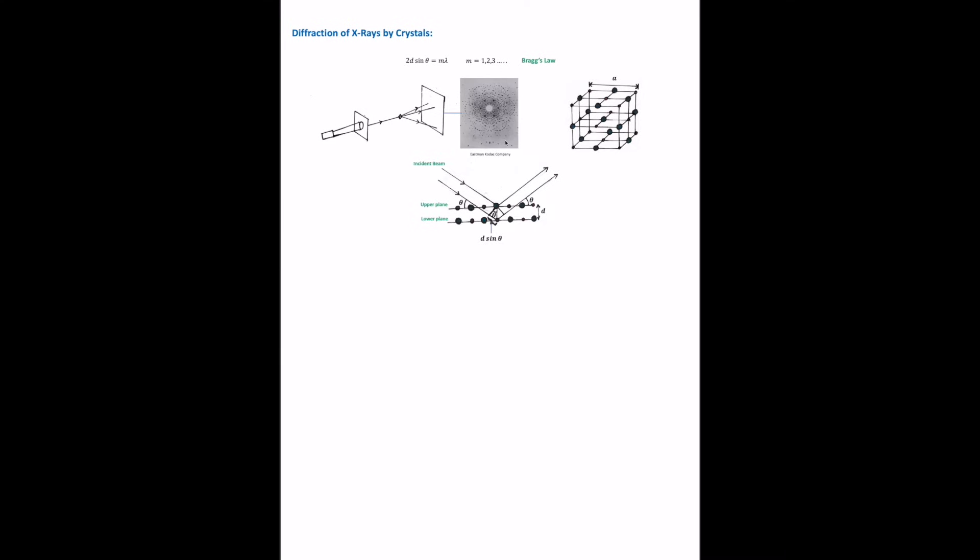One type of diffraction is the diffraction of x-rays by crystals, used to reveal the inner structure of a crystal. X-rays have a wavelength of around one angstrom, and regular arrays of atoms in crystals have a spacing of about one angstrom. The crystal acts as a three-dimensional diffraction grating for x-rays, resulting in constructive and destructive interference at certain positions related to the inner structure, and the condition for constructive interference is given by Bragg's law.